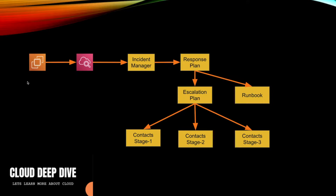In Part 2, what we will do is run an EC2 instance, set up a CloudWatch alarm, and say that if the CPU utilization of the EC2 instance goes beyond 50 percent, then start an incident in Incident Manager. This will follow your response plan created in the last video, which internally starts calling the contacts provided in your escalation plan. Once these contacts are engaged, they will follow the runbook provided in the escalation plan to mitigate the incident.